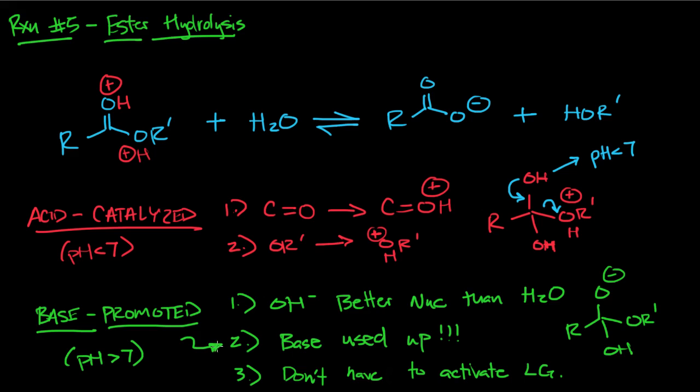With base-promoted hydrolysis, you're going to have OH- as the nucleophile, and then you generate this tetrahedral intermediate over here. Because we're at a basic pH, pH greater than seven, this alcohol or this O is going to stay deprotonated and you don't have to activate the leaving group.